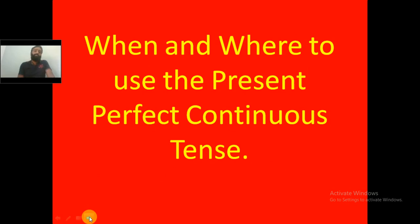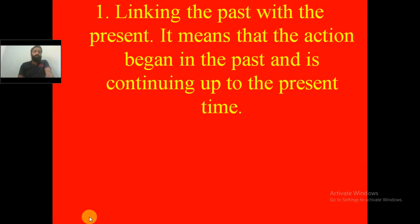Those are the usages of present perfect tense. I hope you have understood and are clear with it. Now we move on to the next part: when and where to use the present perfect continuous tense. The first usage is that it is used to link the past with the present, meaning the action began in the past and is continuing up to the present time.